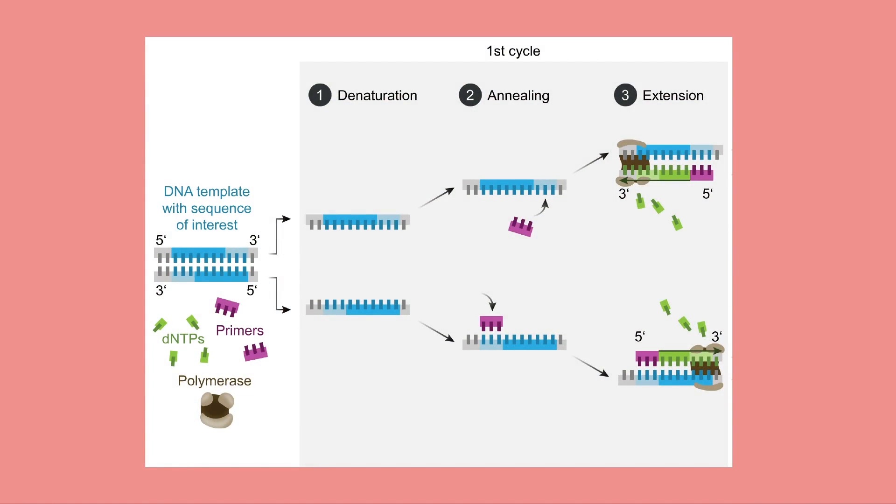It became possible to target the replication of specific sections of DNA by defining the region of interest with short oligonucleotide primers, and then controlling the events in the test tube by modulating the temperature.